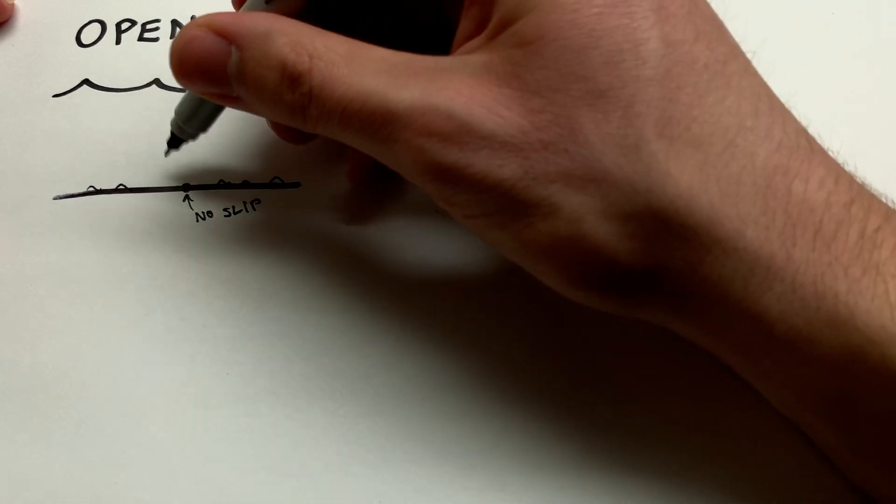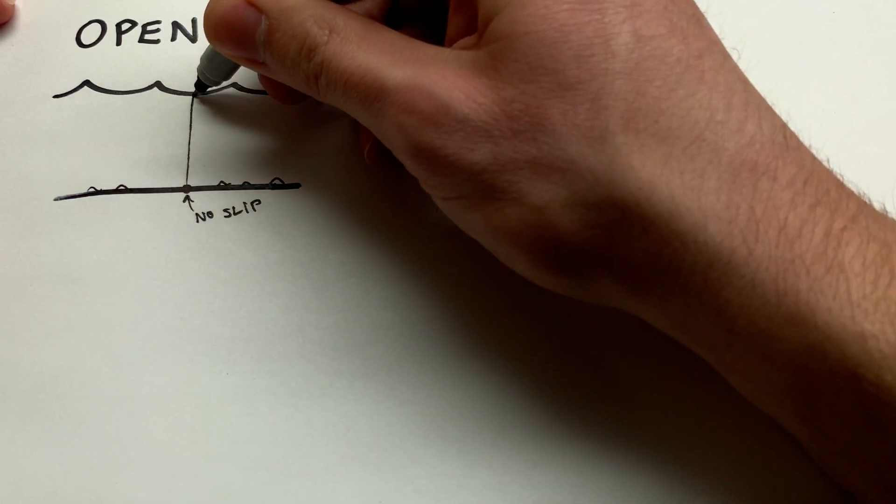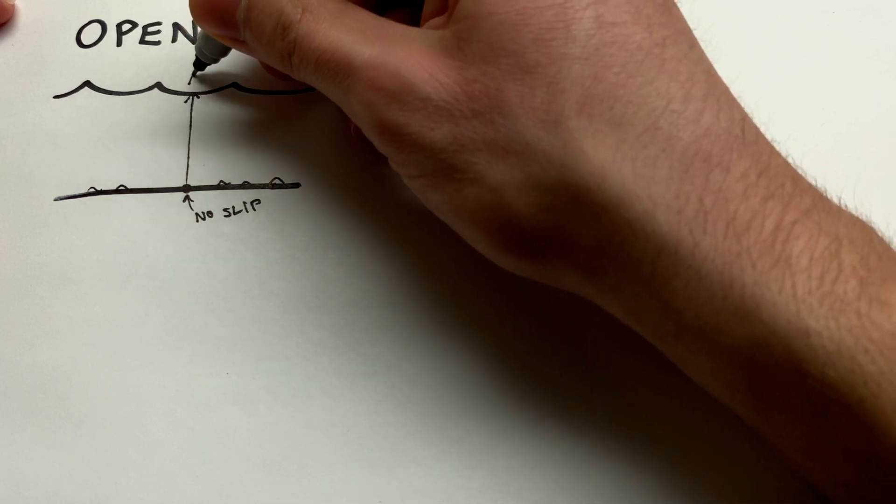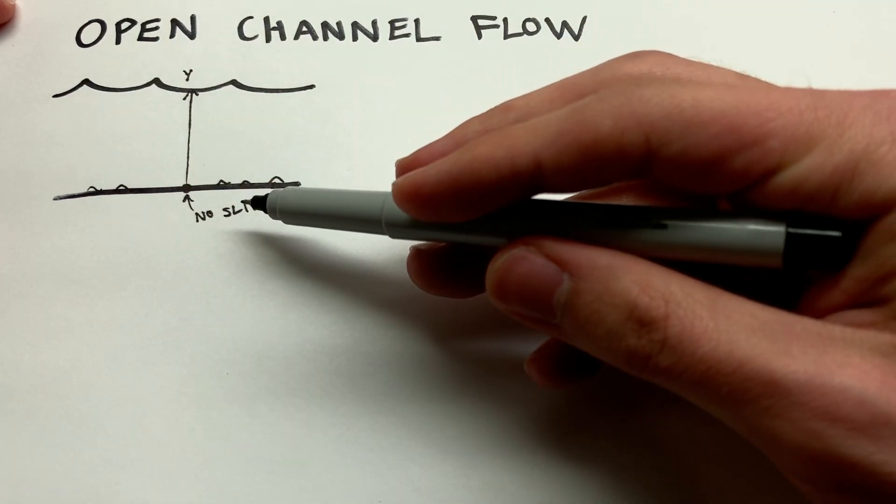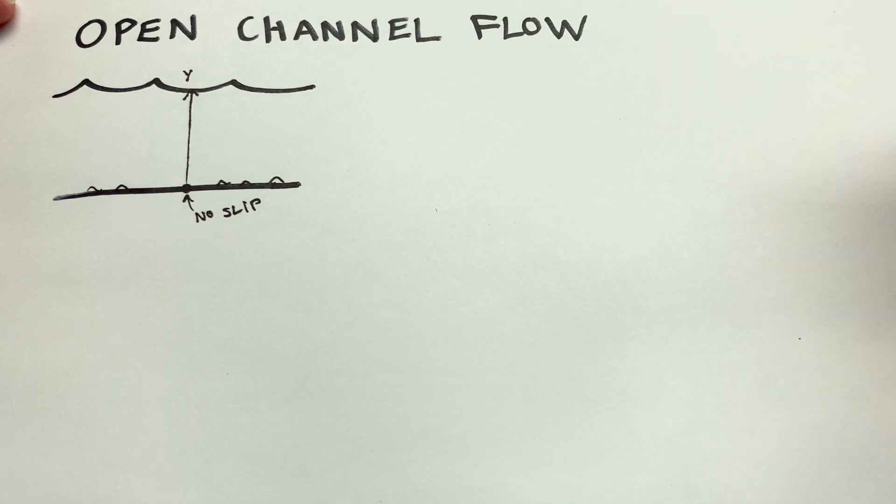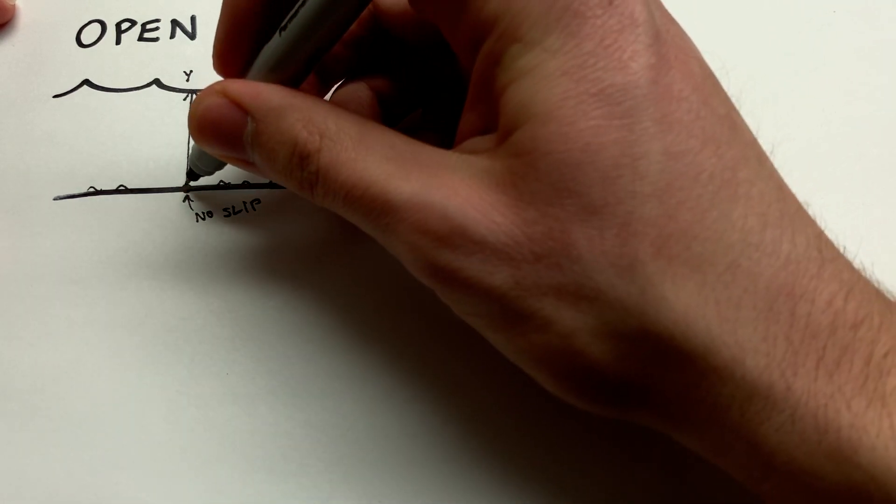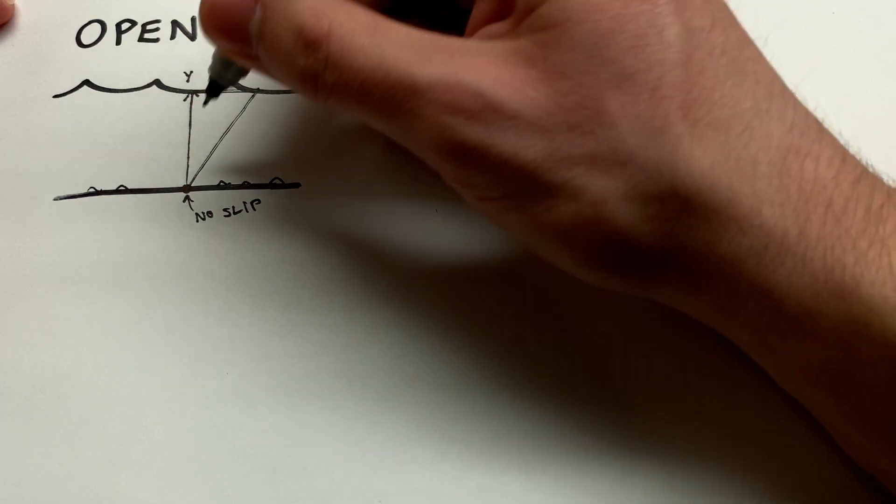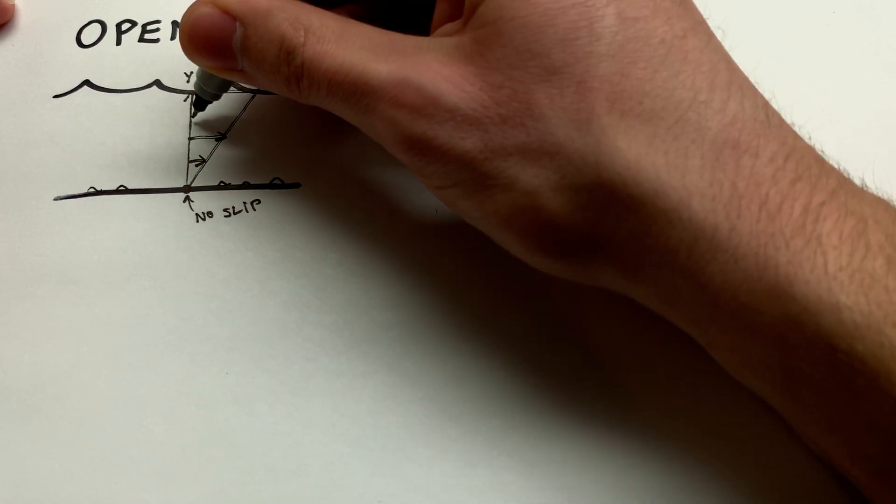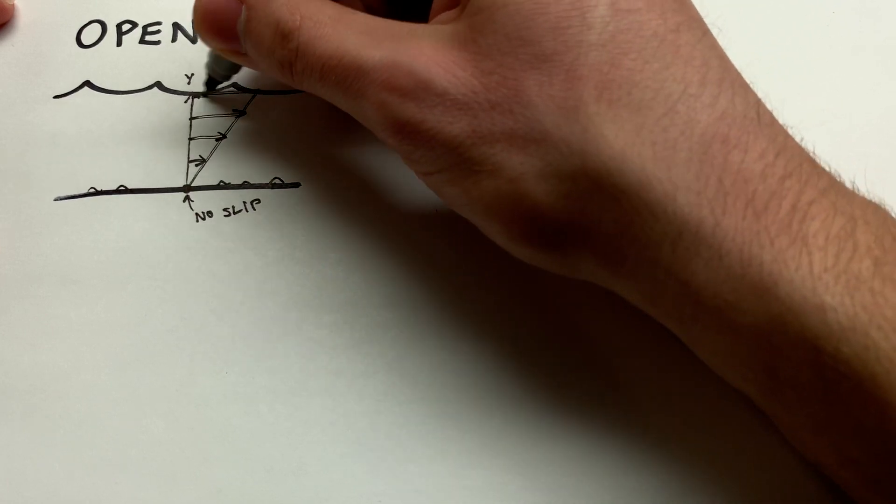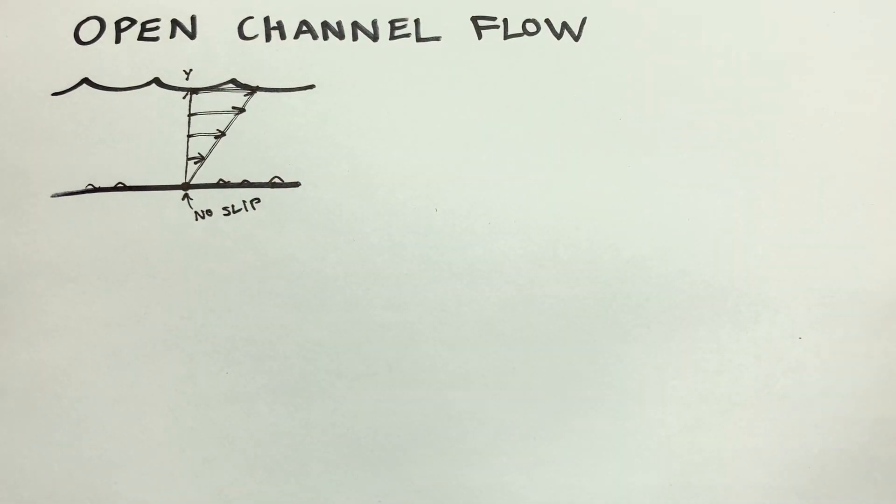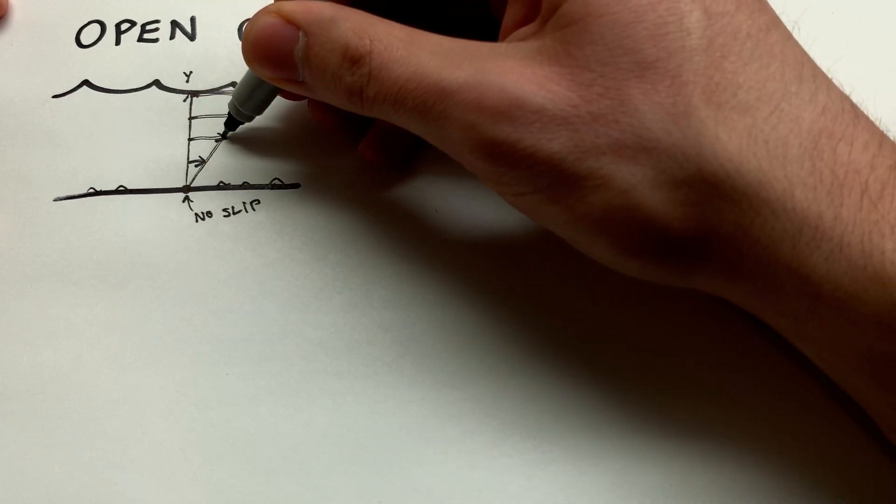So for that reason, our velocity profiles are going to look something like, if this is our y-axis, going from zero off the floor up to the surface of the stream, then we might draw it like something like this, where these lines represent the magnitude of the stream flow, the velocity of the flow. And of course, the triangle is nice because it's really simple. It makes our calculations easy in terms of getting an average velocity along this profile. You just find smack dab in the middle.